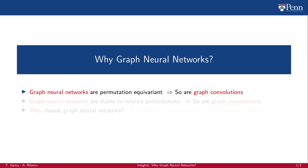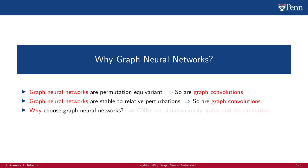We know that graph neural networks are permutation equivariant, but so are graph convolutions. We know that graph neural networks are stable to relative perturbations, but so are graph convolutions. Then why should we choose graph neural networks instead of being satisfied with just graph convolutions? In this segment, we will show that the answer is that GNNs are simultaneously stable and discriminative while graph convolutions are not, and thus GNNs outperform graph filters, especially when high frequency information content is relevant.